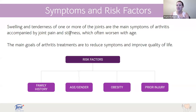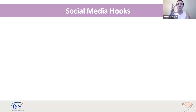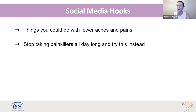The main goal of arthritis treatments is to reduce symptoms and improve quality of life. Risk factors include family history, age, gender, obesity, and prior injury. Reach out to people who have swelling, tenderness, joint pain, or joint stiffness, and offer tips to help them feel more comfortable. For social media hooks — phrases that stop the scroll — you could use things like: 'Things you could do with fewer aches and pains,' or 'Stop taking painkillers all day long and try this instead.'